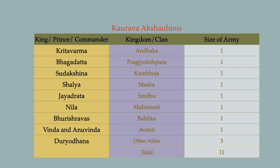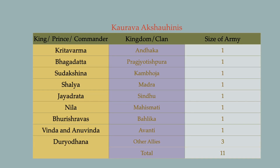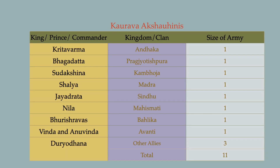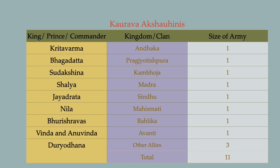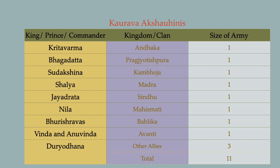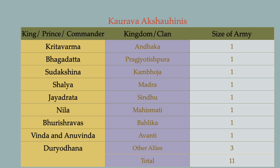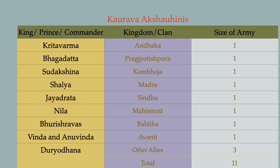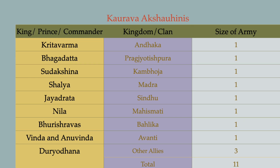On the Kauravas' side, 11 Akshauhinis participated. The first was contributed by Kritavarma, a Yadava from a different clan. The second by Bhagadatta, king of Pragjyotishpura in present-day Assam, and son of Narakasura. The third by Tamboja Raja Sudakshina. The fourth by Shalya, king of Madra Desha and maternal uncle of Nakula and Sahadeva — his sister had married King Pandu. The fifth by Jayadratha of Sindhudesh, son-in-law of the Kauravas, who was married to Dushala. The sixth by Neela, king of Mahishmati. The seventh by Burishrava, son of Somadatta. The eighth by the twins Vinda and Anuvinda from Avanti — present-day Ujjain, Madhya Pradesh.